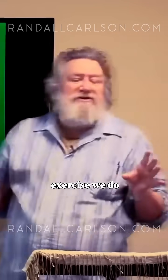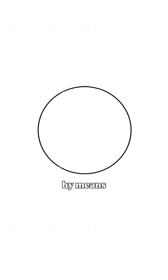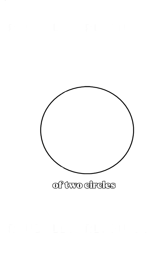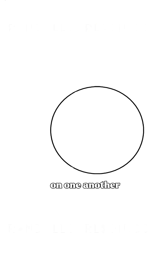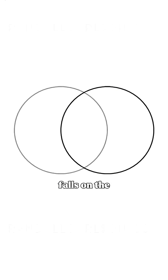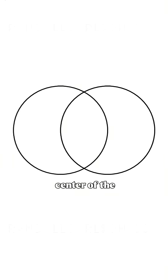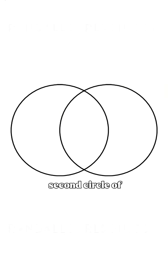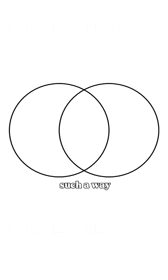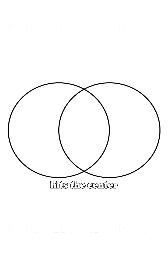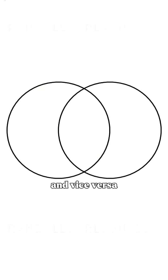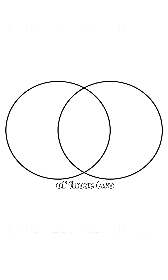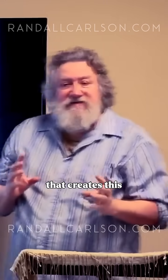The very first exercise we do in sacred geometry is the creation of the vesica. It's created by means of two circles that are overlaid on one another, such that the circumference of one falls on the center of the other. You take a second circle of the same diameter and draw it such that its circumference hits the center of the first one, and vice versa. It's the overlap of those two circles that creates this vesica.